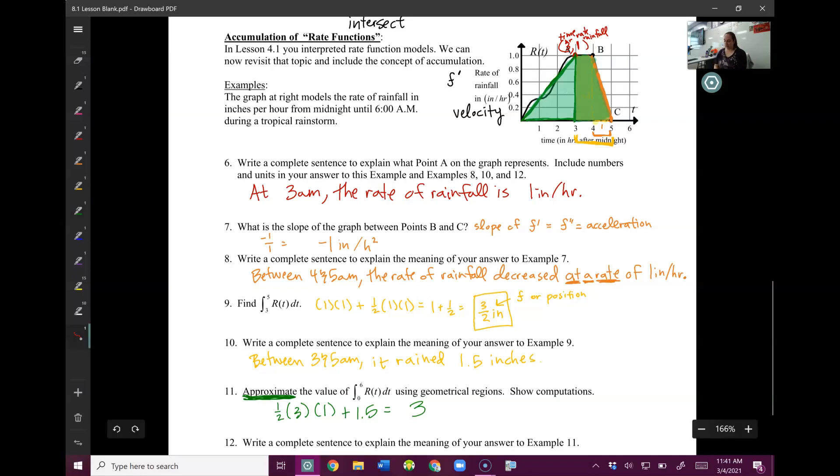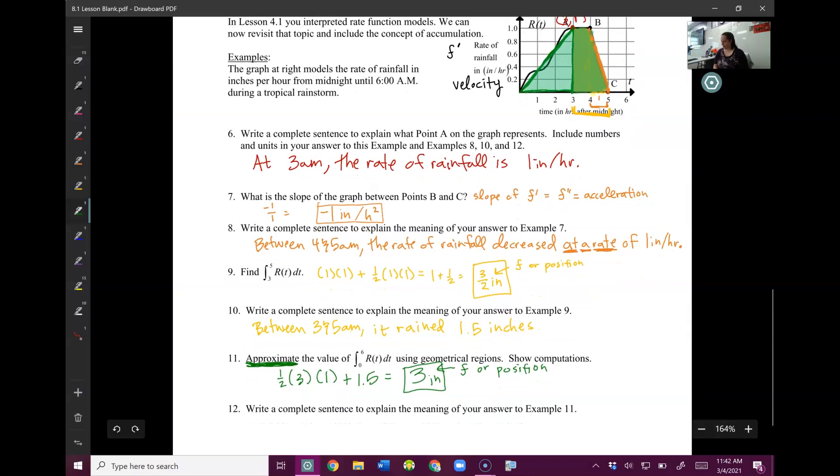And this is still the integral of f prime. So this is still an f or position. Still an original. It's just now it's the position from 0 to 6 instead of from 3 to 6. So let's write a sentence what this means. Between midnight and 6 a.m. The total amount of rainfall was approximately, because this one's not exact, I had to approximate that area, 3 inches.